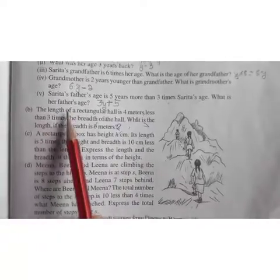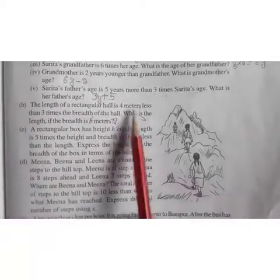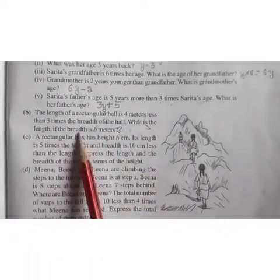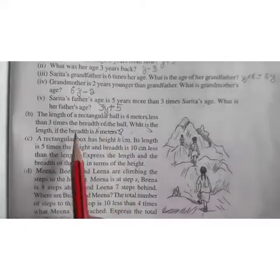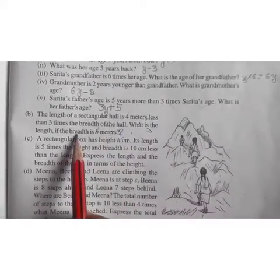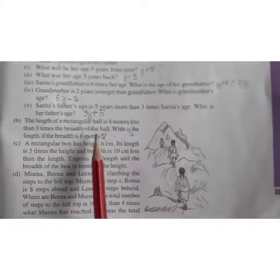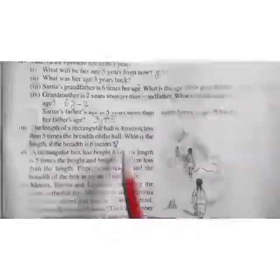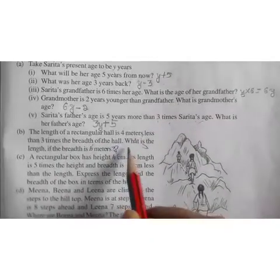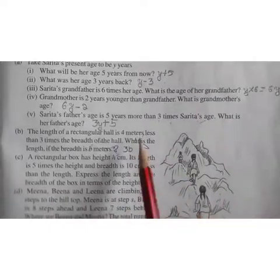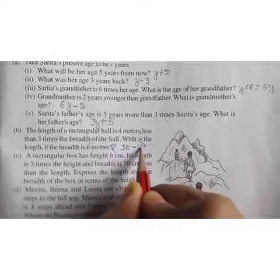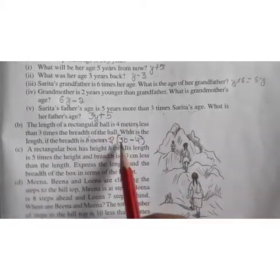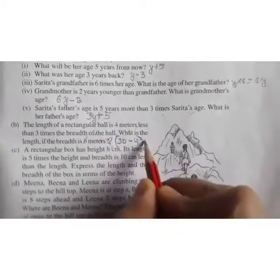Question number B. The length of a rectangular hall is 4 meters less than 3 times the breadth of the hall. What is the length if the breadth is B meters? So already breadth is known, that is B meters. You have to find the length. And what they have given here? 4 meters less than 3 times the breadth. 3 times the breadth means 3B, and 4 meters less means minus 4. So the length of the rectangular hall is 3B minus 4 meters.